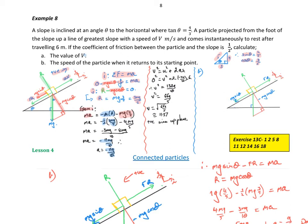So the value of V: I need my initial velocity. Capital V is the initial velocity. I know that v squared equals u squared plus 2as. The final velocity is 0, my initial velocity is what I'm looking for, the acceleration is negative 11g on 10, and s is 6 metres as we were told. Putting all that information in, I get V equals 11.37, positive, so it's up the plane. The initial velocity is 11.37 metres per second.